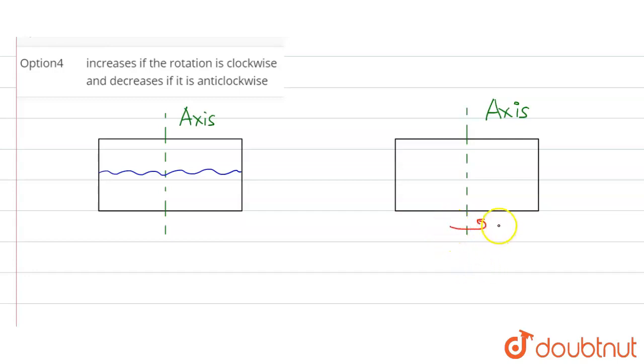So due to centrifugal force this water will be pushed away from the axis. So the water will form something like this. The water pushed away from the axis, this happens due to centrifugal force.